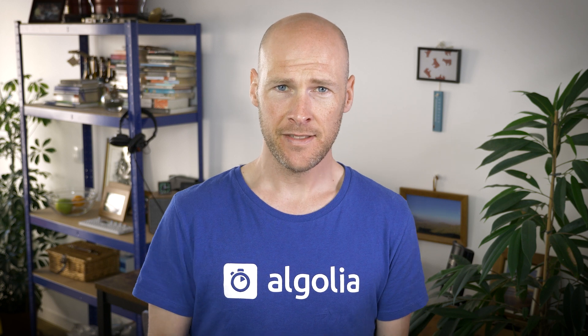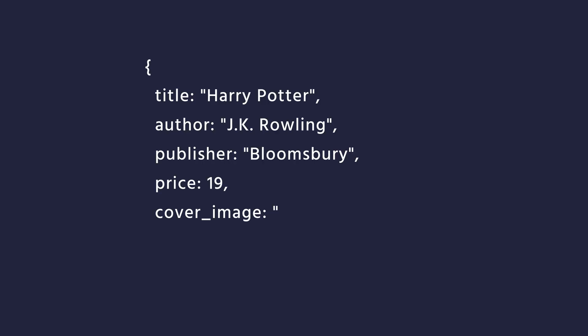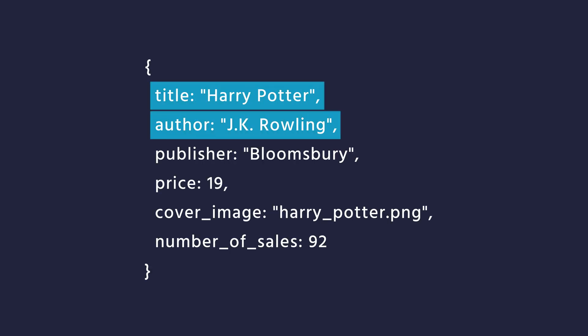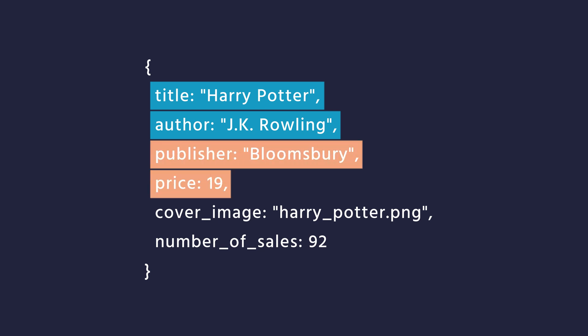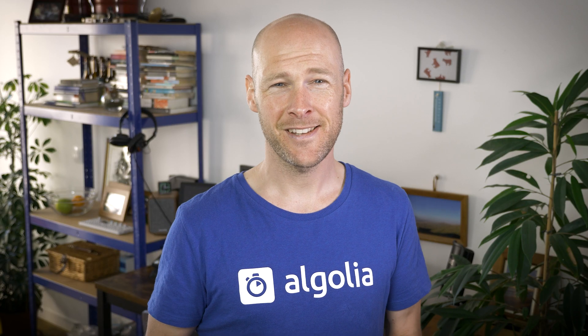Simply put, your search can only be as good as your data. The first thing you can do is get rid of any attributes that are not useful, so the only ones that remain fit into four categories: attributes useful for searching, for filtering, for display, and those with an impact on ranking. Other ways to tidy up your data include removing duplicates, reducing overly long descriptions, and keeping consistent formatting throughout.